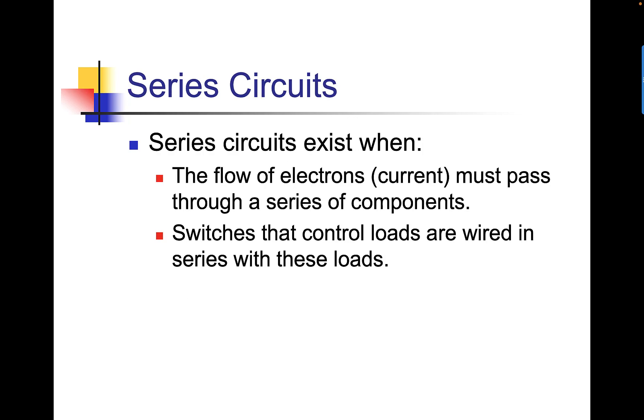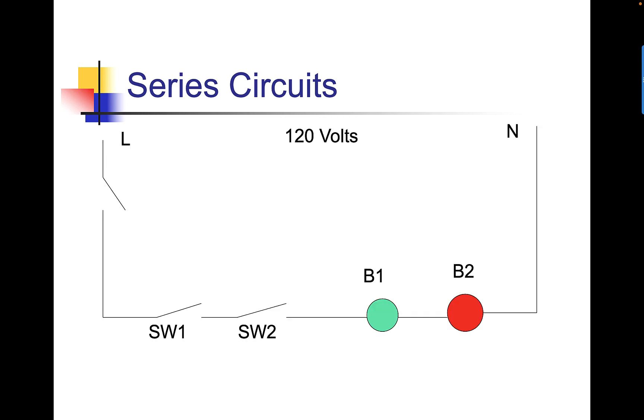The first circuit we're going to talk about is a series circuit. Series circuits exist when the flow of electrons, which is current, must pass through a series of components. Switches that control loads are wired in series with these loads. Here's an example of this.